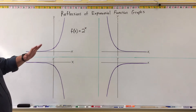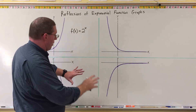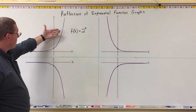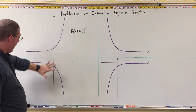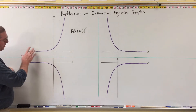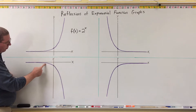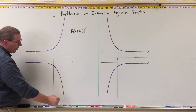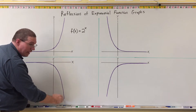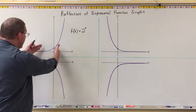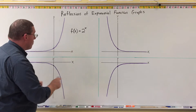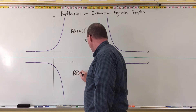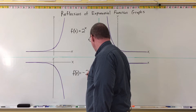What I need you to understand is that this shape can be reflected in two directions. It can be reflected vertically across the x-axis, and when that happens, instead of being above the x-axis, it still goes flat to the left and steep to the right, but instead of going steep up, it goes steep down. That is the graph of f(x) = -2^x.